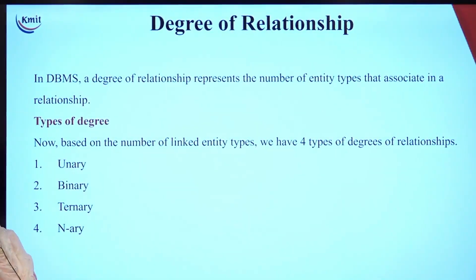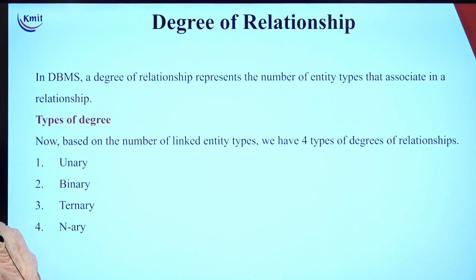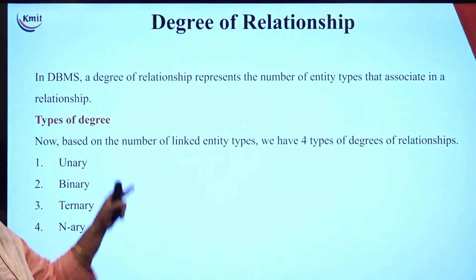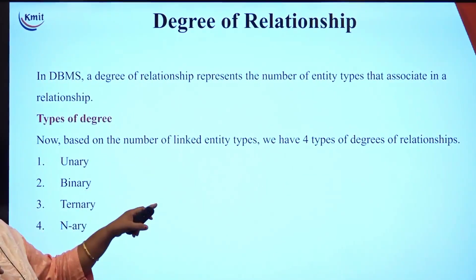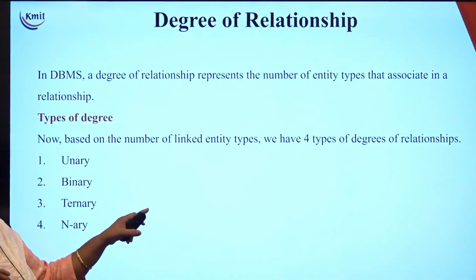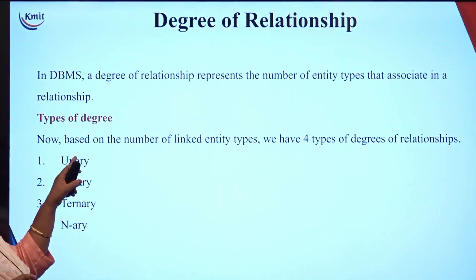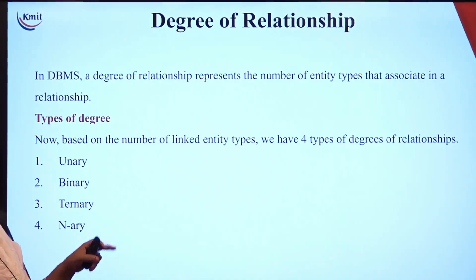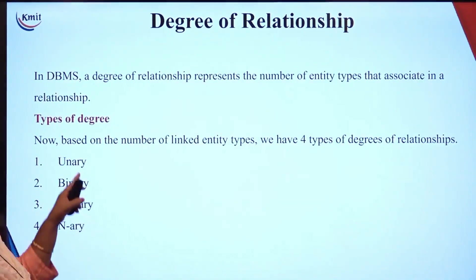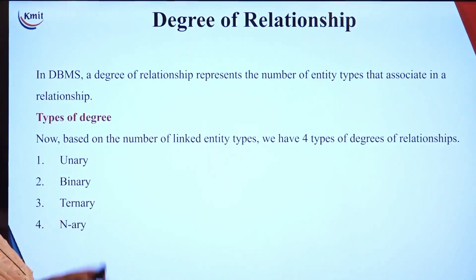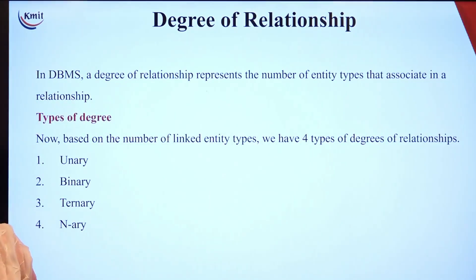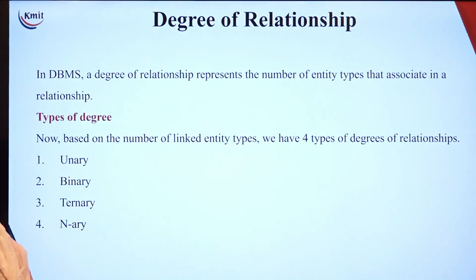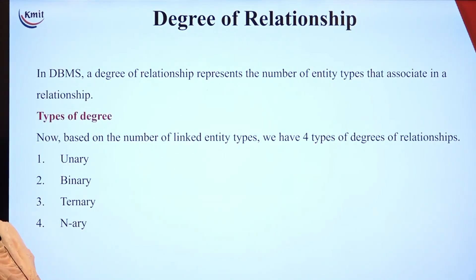How many entity types or entity sets associate in a relationship? Based on the number of linked entity types, we have divided it into unary, binary, ternary, and n-ary in general.